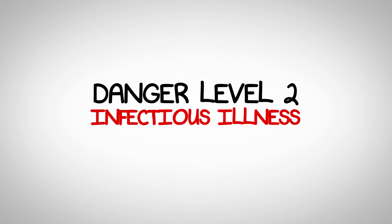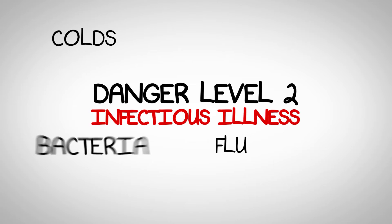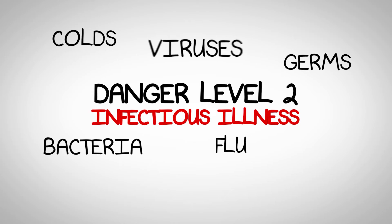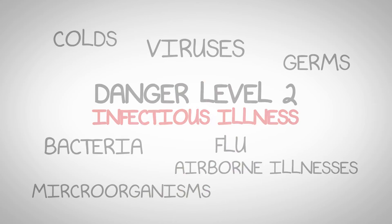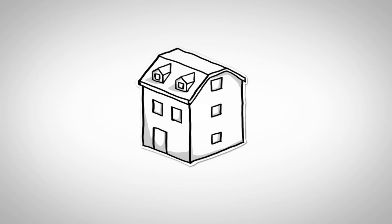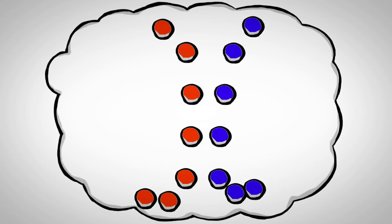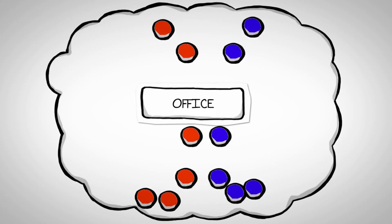Danger level two contaminants are infectious illness in the form of colds, flu, bacteria, germs, and viruses — airborne illnesses or microorganisms. These germs, viruses, and bacteria are naturally carried in by animals and family members from the outside. Once in the house, they go airborne and get sucked into the air distribution system and circulated around the home. I'm sure you can relate to the transferring of illness by sick people present in the same home, office, school, or mass transit vehicle.